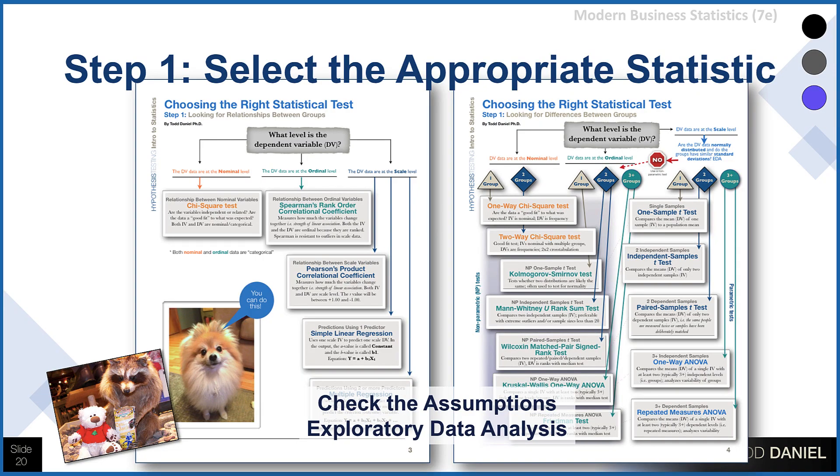Step number one: select the appropriate statistic. It's important that we know what type of test we're going to run. To understand what type of test we will use, we'll have to begin by looking at our data — the levels of the data. We'll want to identify the independent and dependent variables: is the independent variable categorical or continuous? Is the dependent variable nominal, ordinal, interval, or ratio? For example, if we have a categorical independent variable with groups and a continuous dependent variable, we can do things like a z-test or a t-test — those are the tests we're going to learn about next week.